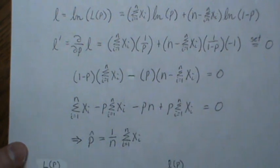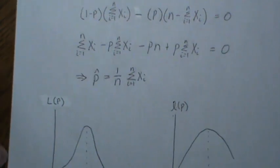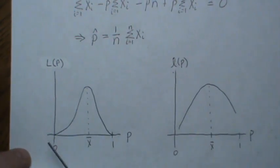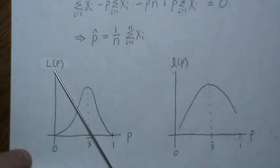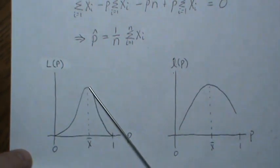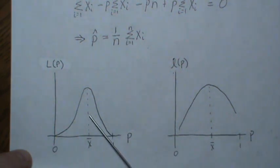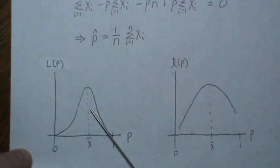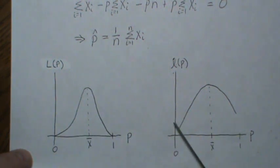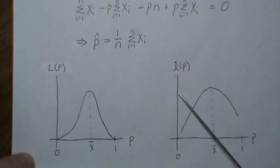In the Bernoulli setting, a picture of what's going on is: this is the likelihood, and it looks very normal-like. And we want to find the argument, or the value along here, that makes that the maximum. Well, it ends up being x̄. And in many cases, it's easier to take a one-to-one function of it—the log—and then solve it.